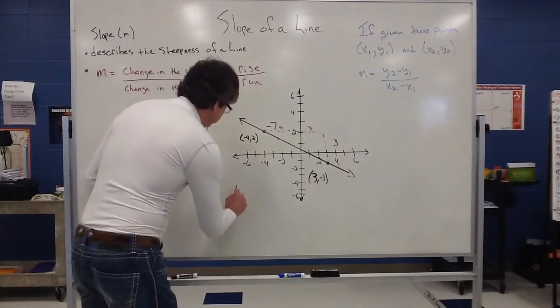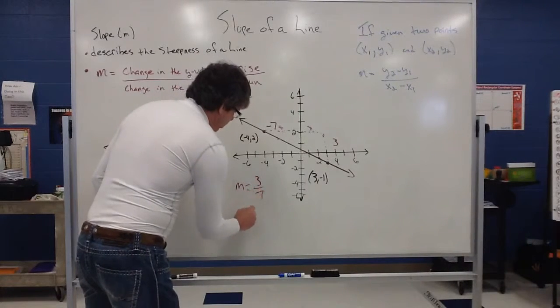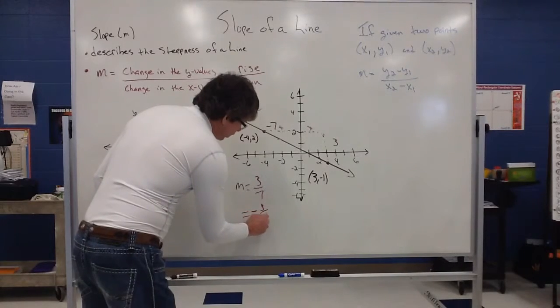So my slope for this line is going to be 3 over a negative 7. But most commonly, we just put the negative out in front. And we can just call it negative 3 sevenths.